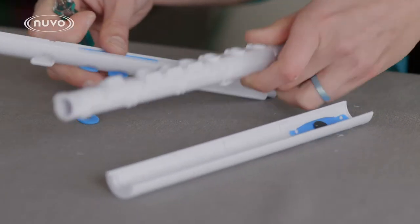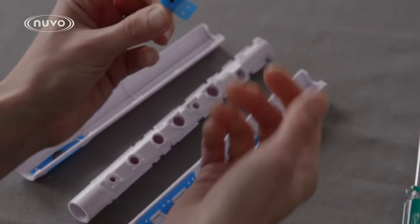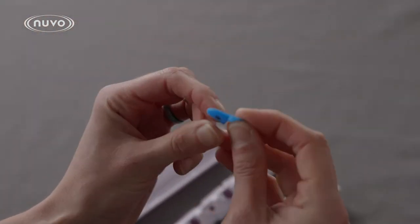Once you have separated the center, you can now see how the keys attach. Each key has two openings where it will attach to the inside of the body. The thicker part of the key goes on the outside.